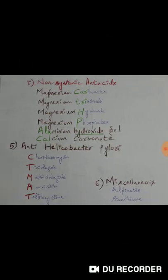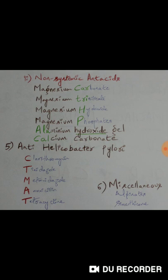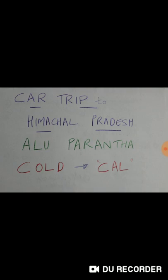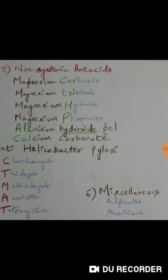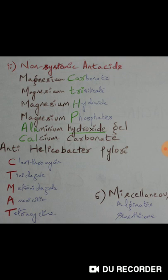For non-systemic antacids, you have magnesium carbonate, magnesium trisilicate, magnesium hydroxide, magnesium phosphate, aluminium hydroxide gel, and calcium carbonate. Note that not all magnesium compounds are non-systemic — magnesium sulfate is not. The mnemonic is: 'car trip to Himachal Pradesh, alu paratha, cold.' Use this to remember the list.